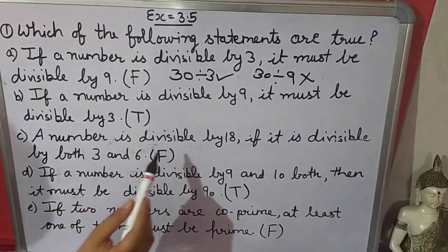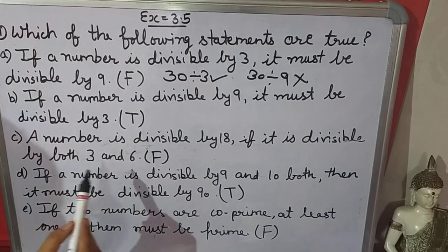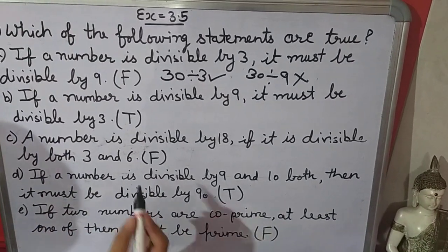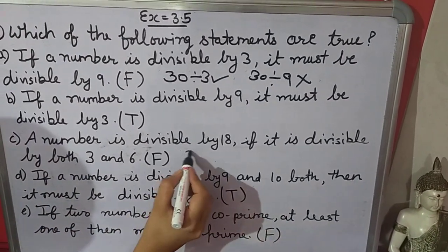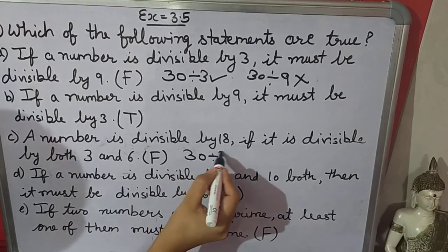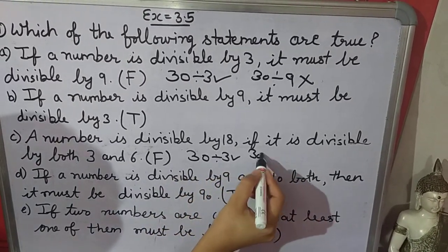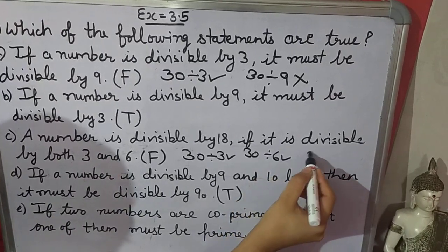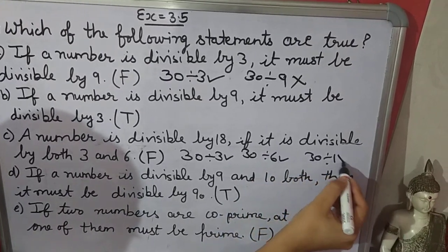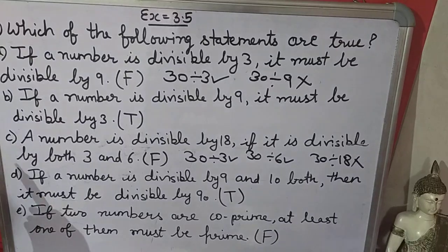A number is divisible by 18 if it is divisible by both 3 and 6 — it is false. If we take the example of 30: 30 is divisible by 3 and also by 6, but 30 is not divisible by 18. So it is false.